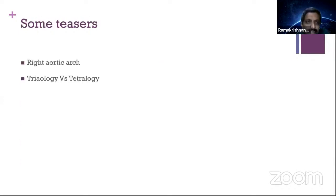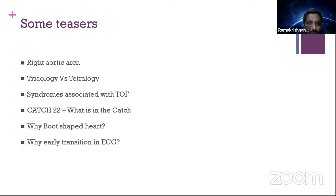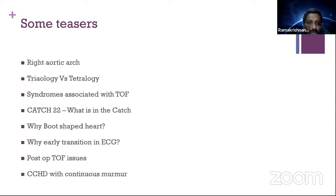Some teasers that examiners are fond of: prevalence of right aortic arch in various conditions — pulmonary atresia, truncus arteriosus. Symptoms commonly associated with tetralogy. What is catch-22 syndrome? Why is the heart boot-shaped in tetralogy? Why is there early transition in the ECG? What are post-operative tetralogy issues? And CCHDs with continuous murmur.